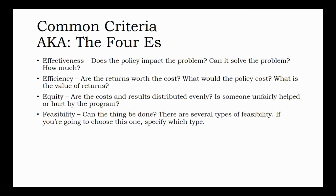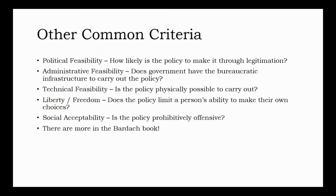Last of the four E's is feasibility. This is a basic term, and you will need to decide which type of feasibility you're going to use. Basically, this refers to whether the policy you're assessing can be implemented — is there something that makes this policy difficult or impossible? The types of feasibility you can choose from include political feasibility, administrative feasibility, and technical feasibility.